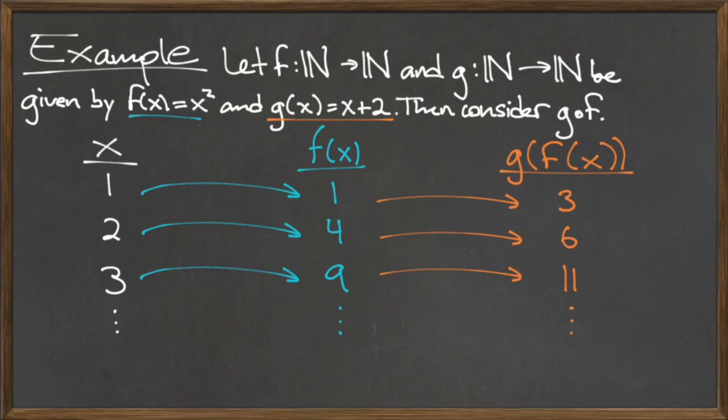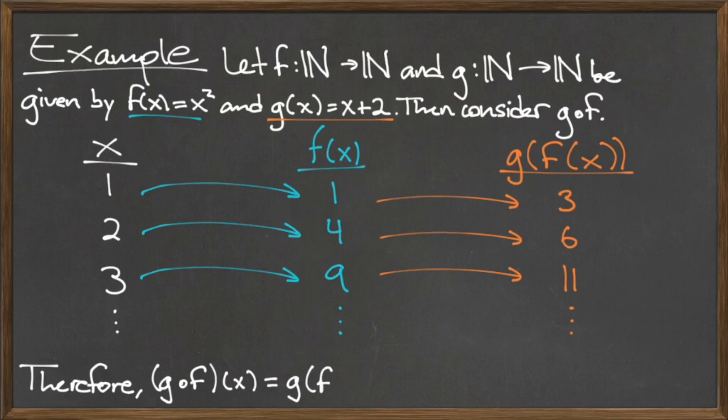If we wanted to express the composition g compose f as a single function, we can take the algebraic expression for f, which is x squared, and replace the x in the algebraic expression for g with that x squared. So the function g compose f is actually the equation x squared plus 2.